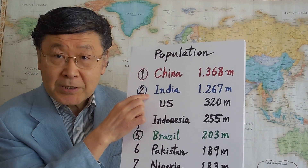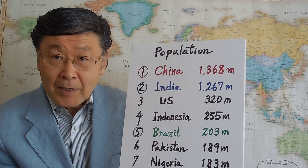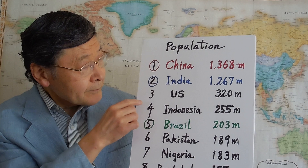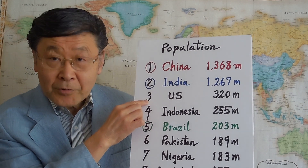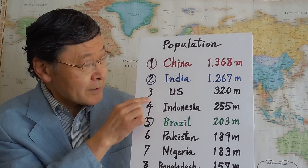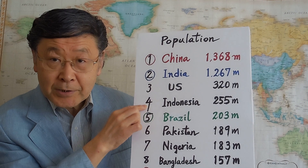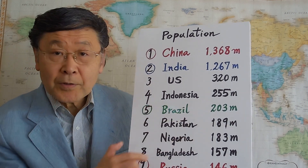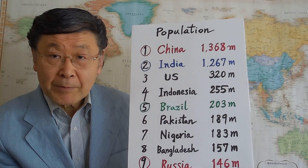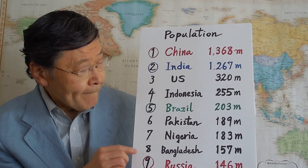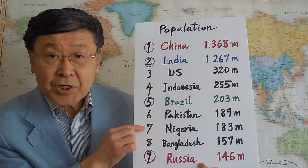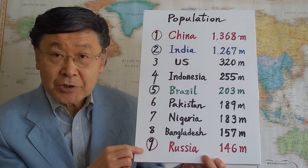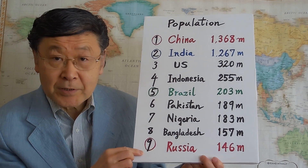India is catching up with China rapidly. Third is the United States, fourth is Indonesia, and fifth is Brazil with a little bit more than 200 million people. Then Pakistan, Nigeria, Bangladesh, and Russia with 146 million.